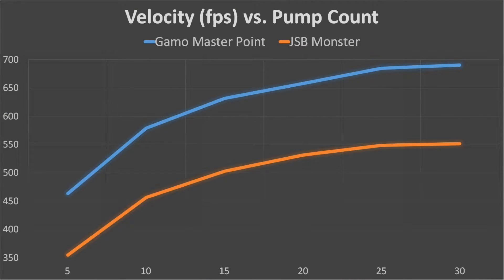Here's the velocity data that we collected. It appears that each pellet reaches an effective ceiling in velocity at 30 pumps. As expected, each curve looked similar, but the heavier pellets shifted down on the graph.